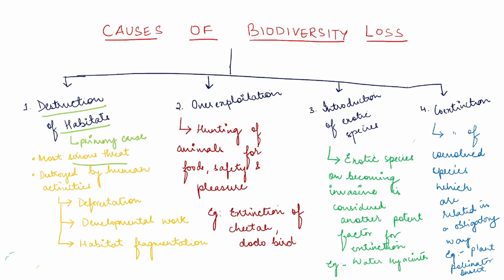The Amazon rainforest, also known as the lungs of the planet, harboring probably millions of species, is being cut and cleared for cultivating soya beans. Habitat destruction is leading to one of the major primary causes of biodiversity loss. It is mainly driven by human activities, which include deforestation, cutting down of trees, and developmental work.